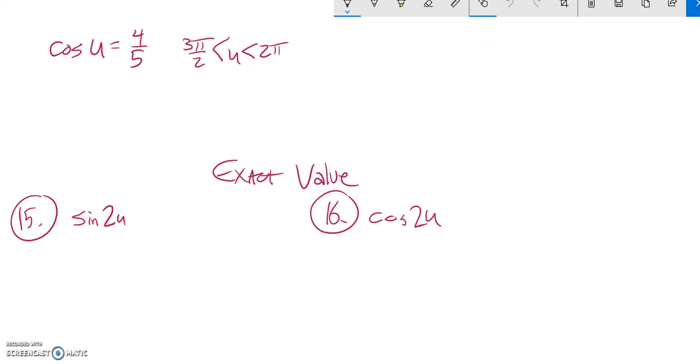So we know the cosine of U is equal to 4 fifths, and we're told that U is bounded, but it's somewhere between 2π and 3π over 2.